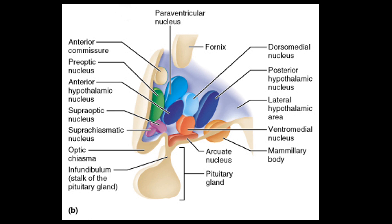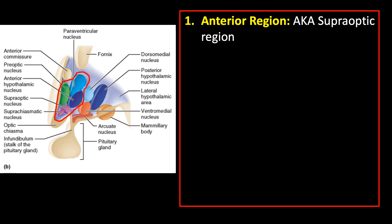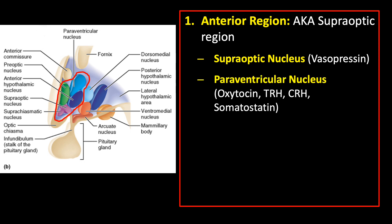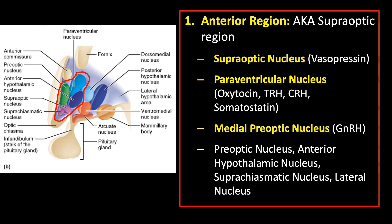The hypothalamus has three regions: the anterior region, the middle region, and the posterior region. The anterior region is also known as the supraoptic region. Important nuclei and their corresponding hormones include: the supraoptic nucleus, which produces vasopressin or antidiuretic hormone; the paraventricular nucleus, which produces oxytocin; thyrotropin-releasing hormone; corticotropin-releasing hormone; somatostatin; and the medial preoptic nucleus, which produces gonadotropin-releasing hormone.